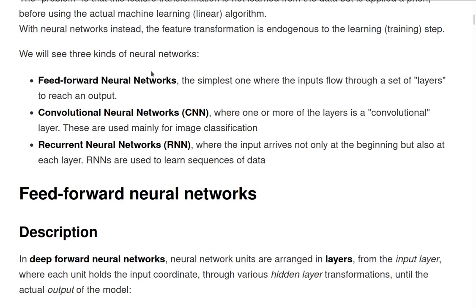We will see three different types of neural networks. Feedforward neural networks are the classical, simpler ones, where the input flows from the data through a set of layers and finally reaches an output — all happening in one direction.